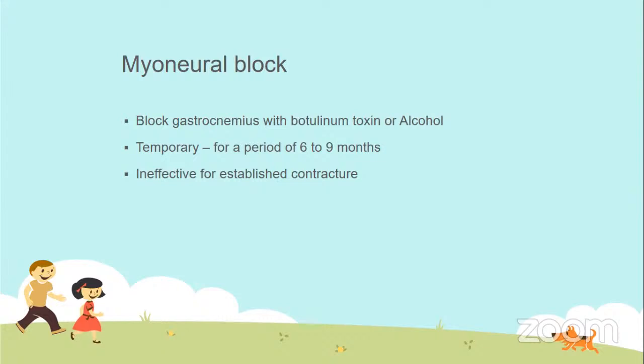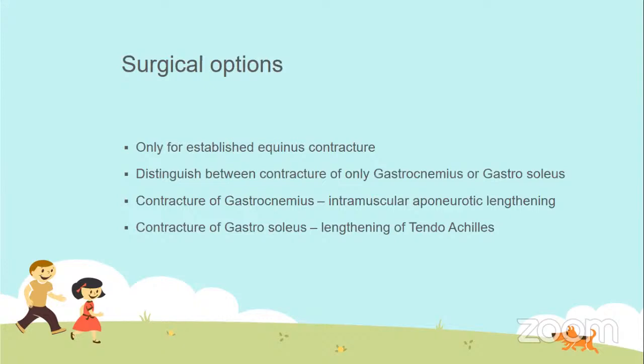The next option is myoneural block of the gastrocnemius using botulinum toxin or alcohol. The effect is temporary, lasting six to nine months, during which effective physiotherapy and bracing should be pursued. If contracture has already developed, myoneural block should not be used. Surgical options are reserved only for established equinus contracture. The Silfverskiöld test is used to differentiate whether only the gastrocnemius is contracted or both gastrocnemius and soleus are involved.